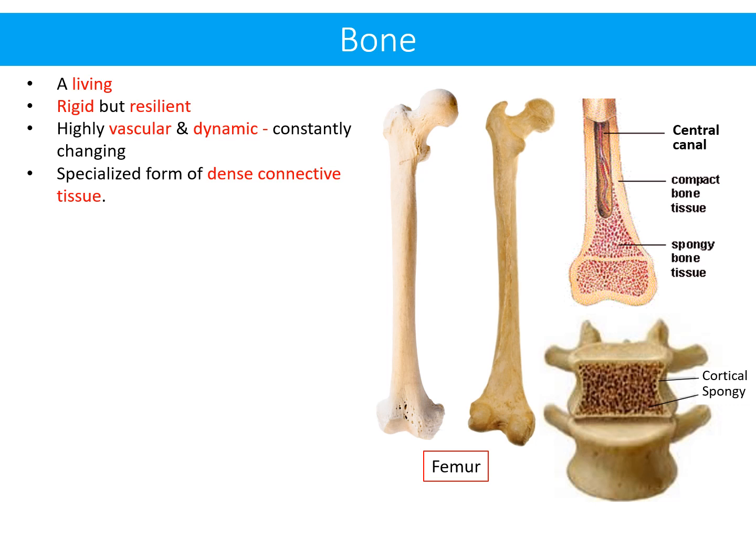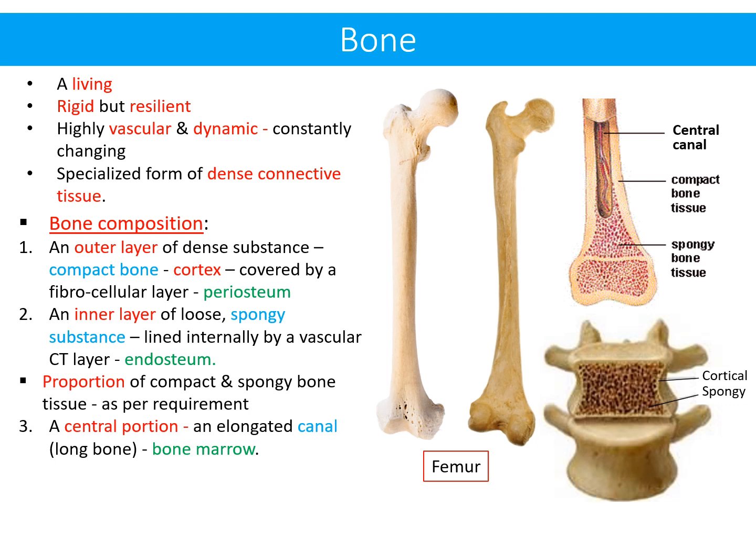Bone is a living, rigid but resilient, highly vascular and dynamic — constantly changing — specialized form of dense connective tissue. Regarding bone composition, it consists of: number one, an outer layer of dense substance named compact bone, also called the cortex, covered by a fibrocellular layer called the periosteum.